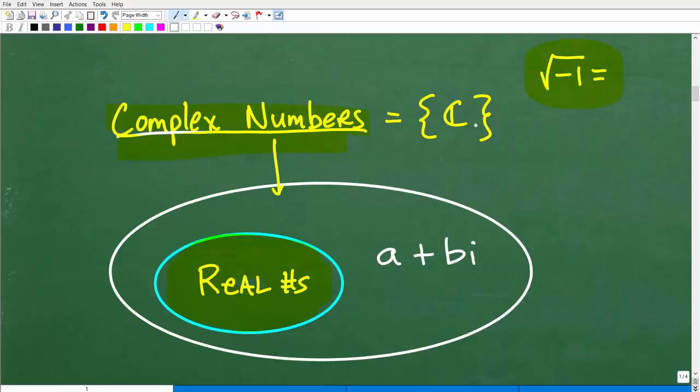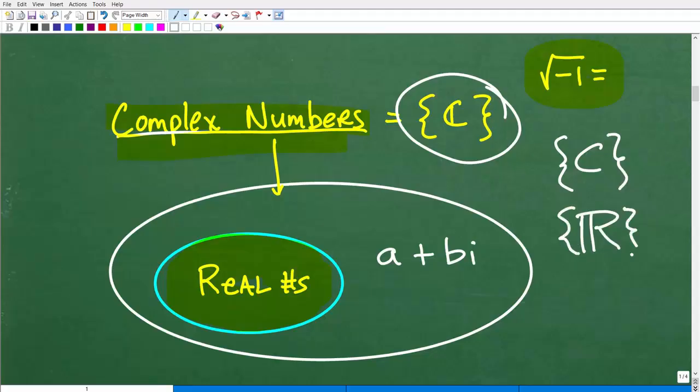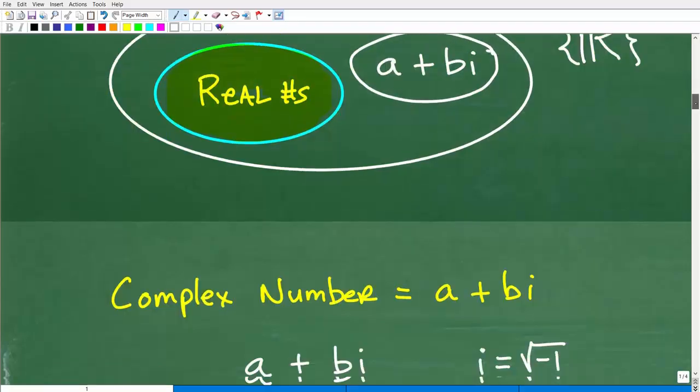Now, notice this little notation here. This little bracket right here in mathematics is kind of typical of what we call a set. So if you see a C like that, that could be like the complex number system or a big R like that, that would represent the real number system. Or sometimes you'll have like that, the set of real numbers. So just a little bit about mathematical notation. Now, when you're looking at complex numbers, we're going to see that complex numbers take the form of something called a plus bi. So this is what a complex number looks like. And let's go ahead and explore that right now.